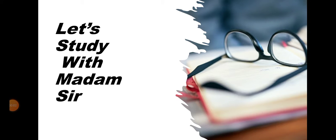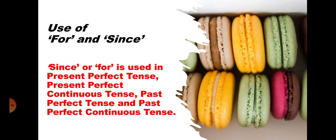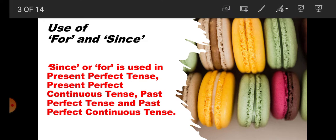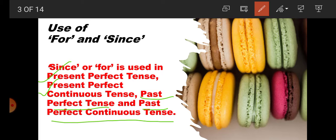Hello my dear students, welcome again in my channel. Let's study with madam sir. In our complete series of English grammar, today we are going to read the use of for and since. We all know that for and since is used in present perfect tense, present perfect continuous tense, past perfect tense and past perfect continuous tense. Now we are going to read the rules of use of for and use of since.